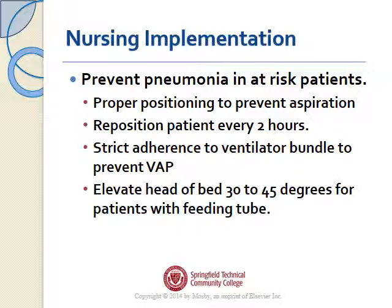To prevent pneumonia in at-risk patients, position them properly to prevent aspiration — head of bed greater than 35 to 45 degrees. Reposition the patient every two hours. Adhere strictly to the ventilator bundle to prevent ventilator-associated pneumonia. Elevate the head of the bed 30 to 45 degrees for patients with a feeding tube, and make sure feeding tube position has been properly confirmed — in acute care, that means an x-ray.